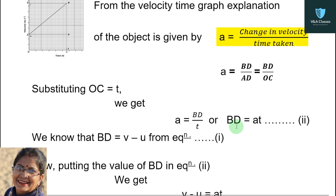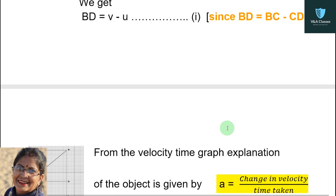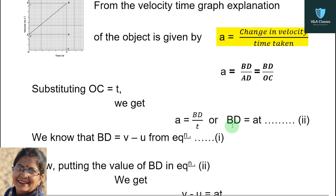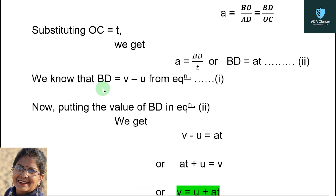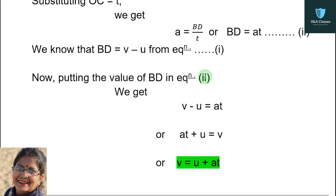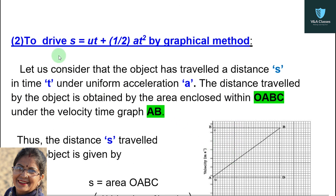From equation 1, BD equals V minus U. Putting the value of BD in equation 2: V minus U equals AT. Rearranging — taking minus U to the other side — gives AT plus U equals V. Writing it in reverse: V equals U plus AT. So the first equation is derived: v equals u plus at.